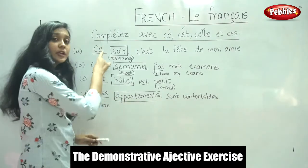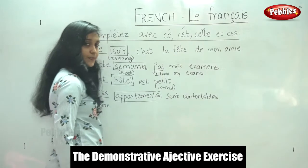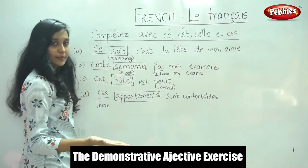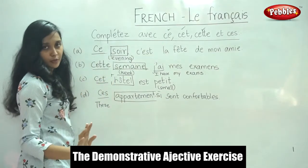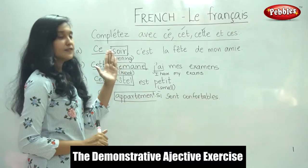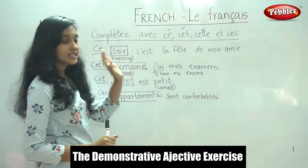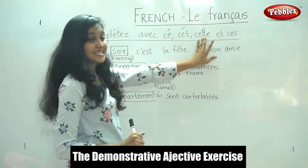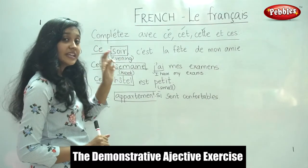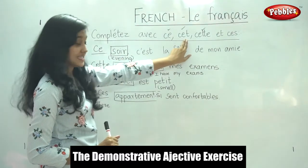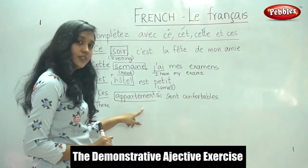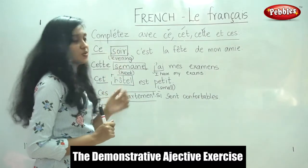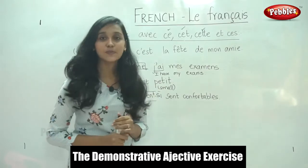So what did we do in this exercise? We read the sentence, identified the noun, and determined whether it is masculine or feminine, singular or plural. Very simple: if it is masculine singular, use 'ce'; feminine singular, use 'cette'; masculine singular beginning with a vowel or h muet, use 'cet'; and if it is plural — whether masculine or feminine — use 'ces'. This is the demonstrative adjective.